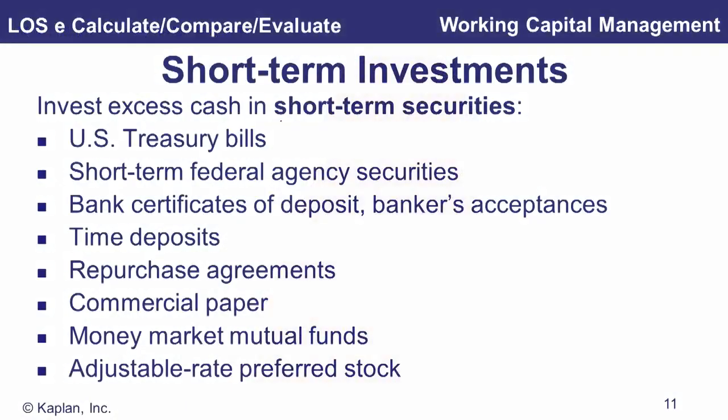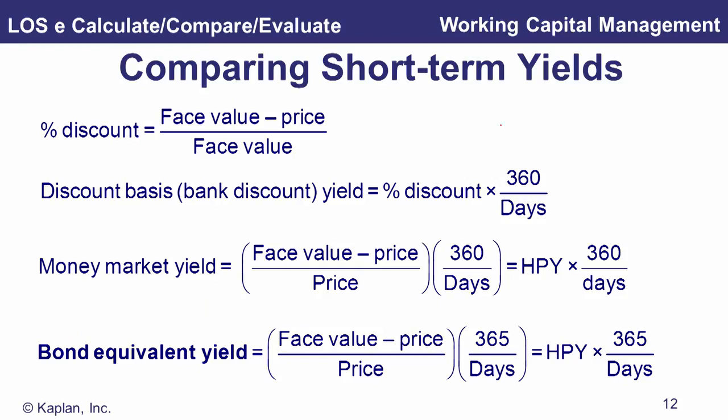Excess cash should be invested in short-term money market securities, which are very liquid and safe. These include US Treasury bills, short-term federal agency securities (such as Freddie Mac and Fannie Mae), bank certificates of deposit, bankers' acceptances, time deposits, repos, and commercial paper. When comparing these instruments, we need to compare yields, and these short-term yield calculations have been covered previously in quantitative methods.